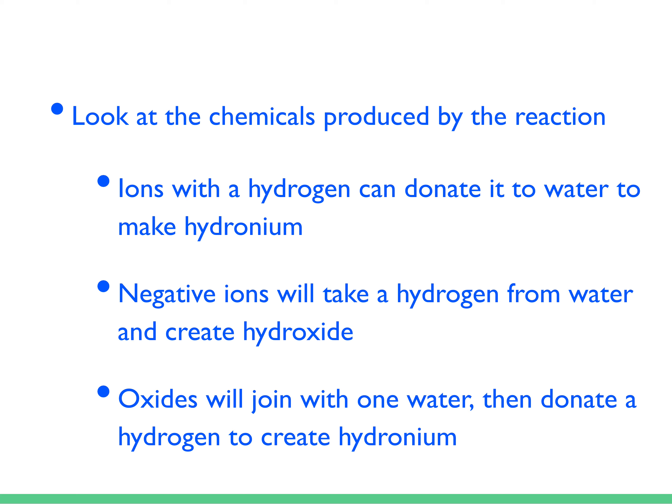Now, what if it's both negative and it has a hydrogen? That means it can actually act as both an acid and a base. Something like HCO3- has both a hydrogen and a negative charge, so it can actually act as both. We're going to deal with that more next year in CHEM30, so don't worry about it too much.